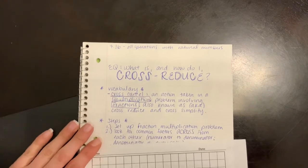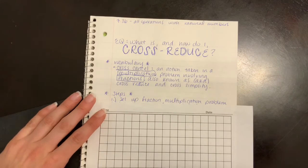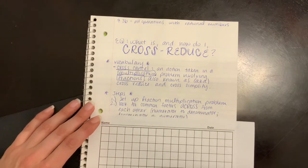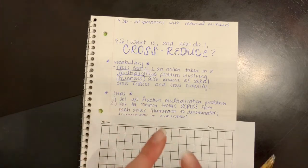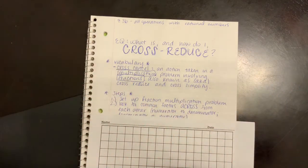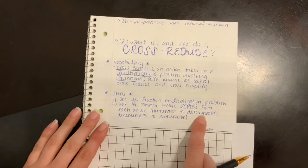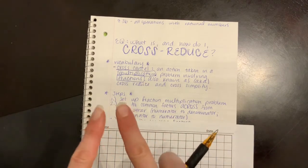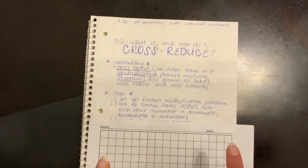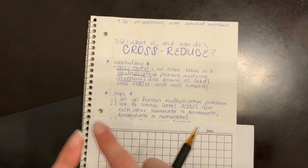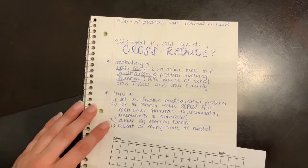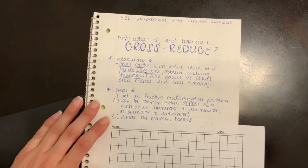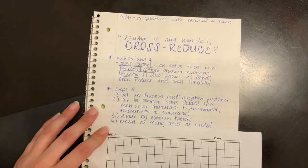Our steps. Step number one, set up your fraction multiplication problem. Step number two, look for common factors across, across, from each other. Numerator to denominator, and denominator to numerator. We're not going straight. We're not going from top to top and bottom to bottom. We're going from top to bottom and bottom to top. We're going across. Step number three, divide by the common factor. Step number four, repeat as many times as needed.